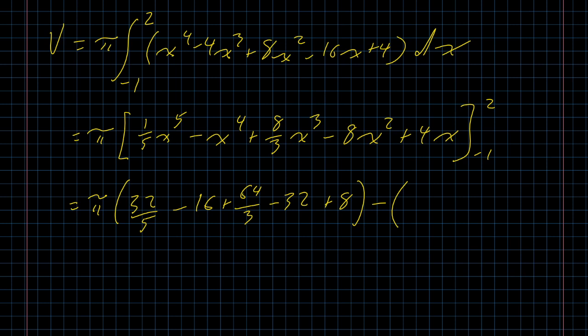Then try plugging in x equals negative 1. Whenever we have an odd exponent, it'll be negative. Whenever we have an even exponent, it will be positive. So we'll have minus 1 fifth, minus 1, minus 8 thirds, minus 8, minus 4. But of course, all this is minus. So we're actually going to add it all. So let's get all of the whole numbers together. We've got minus 16, minus 32, which is minus 48. Plus 8, that takes us to minus 40. Minus a negative 1, negative 39. Minus a negative 8, negative 31. Minus a negative 4, negative 27.